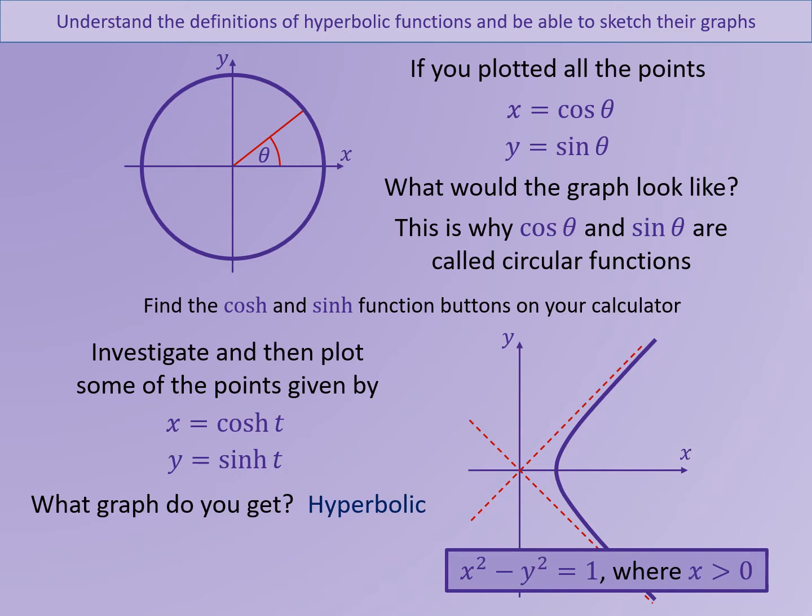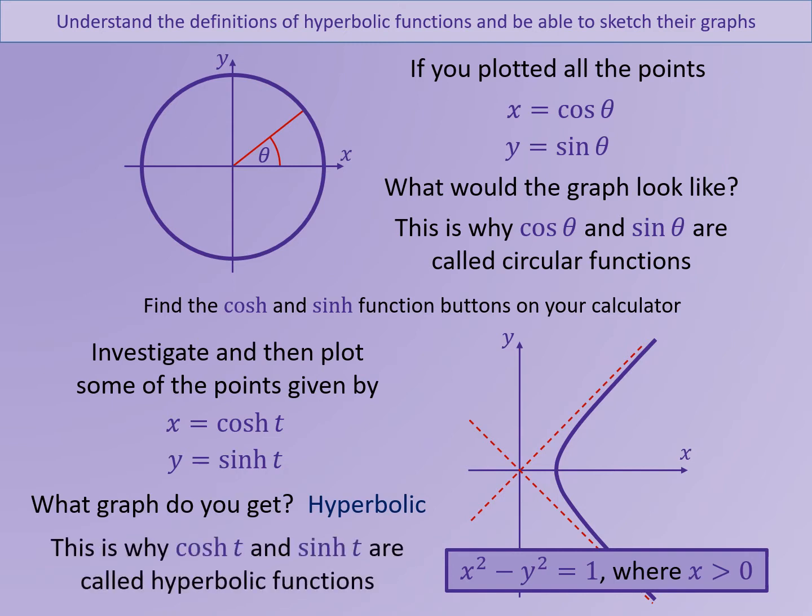The curve here is represented by the equation x squared minus y squared equals 1, for positive x values only. This is why we call cosh t and sinh t hyperbolic functions. This topic will look in more detail at the hyperbolic functions and how we can use them to solve problems.